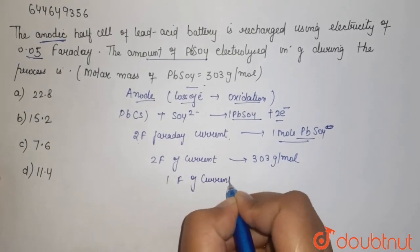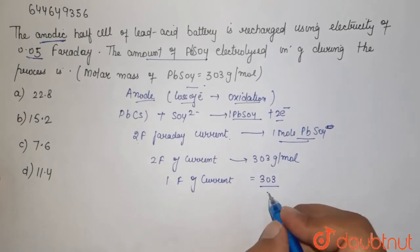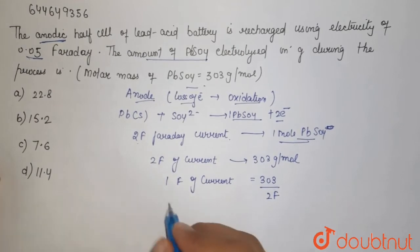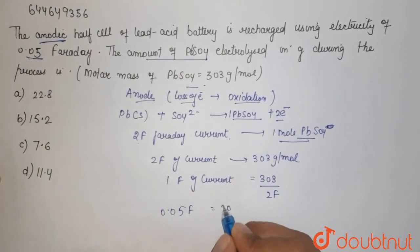One Faraday of current uses 303 divided by 2, and we want to calculate for 0.05 Faraday. So it comes out to be 303 divided by 2 times 0.05.